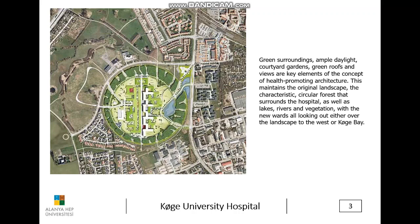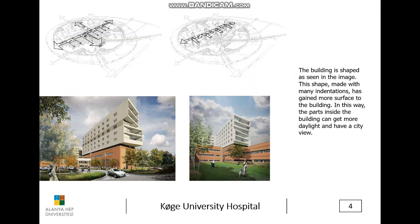Green surroundings, ample daylight, courtyard gardens, green roofs, and the wave are key elements of the concept of health-promoting architecture. This maintains the original landscape, the characteristic circular forest that surrounds the hospital, as well as lakes, rivers, and vegetation, with the new wards all looking out over the landscape to the west of Koch Bay.